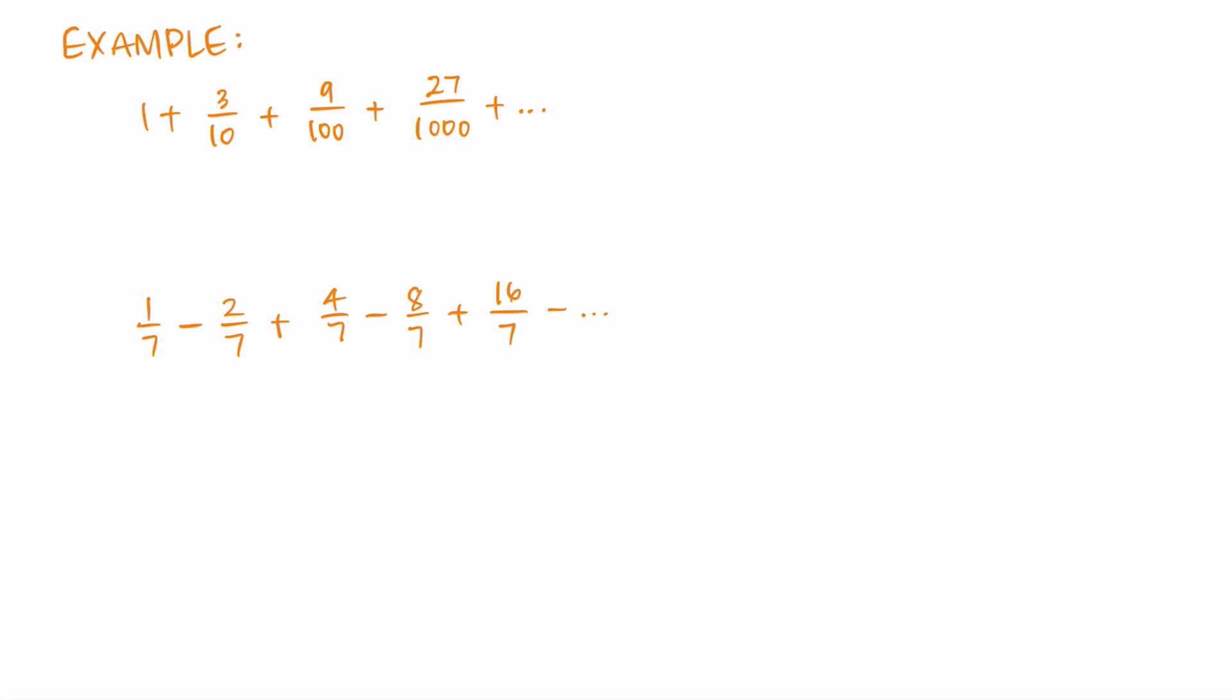So the first sum I have is 1 + 3/10 + 9/100 + 27/1000, etc. And the second sum we'll look at is 1/7 - 2/7 + 4/7 - 8/7 + 16/7, etc. So because geometric series have a first term of a, they're a plus ar plus ar squared, we can just look at the first term of this sum to find the a value.